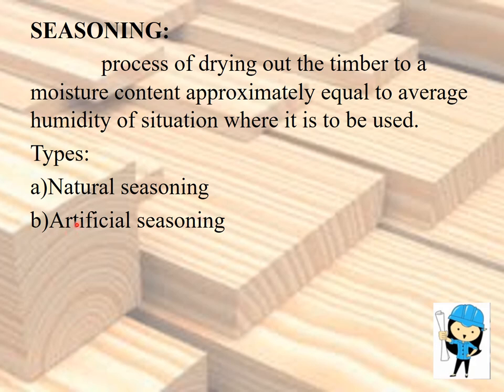In natural seasoning, timber is stacked horizontally or vertically above 30 cm from the ground under a curved shed. For every 25 cm thickness of timber, softwood takes about 2 to 3 months and hardwood takes about 12 months for seasoning. These are two very important points which are repeatedly asked about natural seasoning.